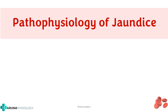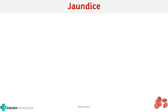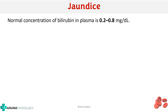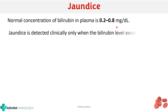In this video we are going to briefly see about the pathophysiology of jaundice. We will see the basic classification of jaundice, the pathophysiology, and the differences between the three types. Jaundice occurs when the bilirubin level in the body crosses the normal limit. The normal concentration of bilirubin in the plasma is around 0.2 to 0.8 mg per deciliter. Jaundice is clinically detected when bilirubin exceeds 2 mg per deciliter.